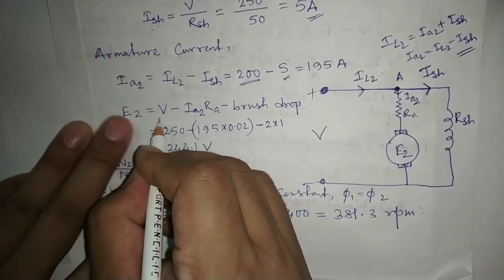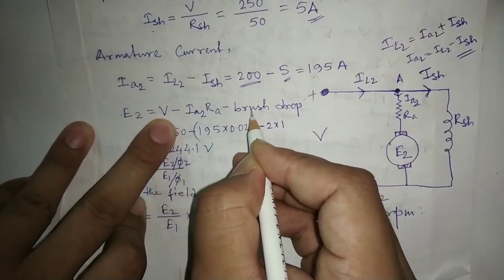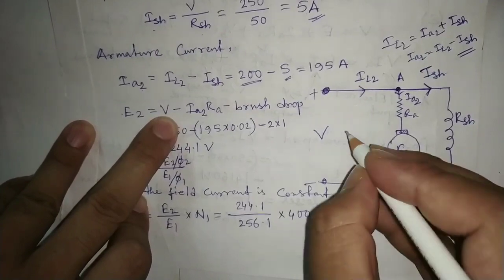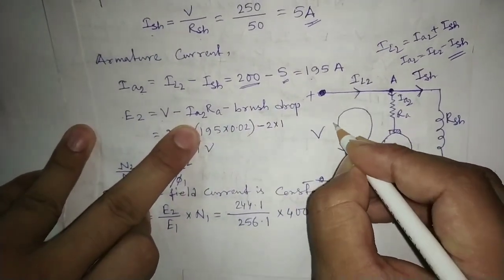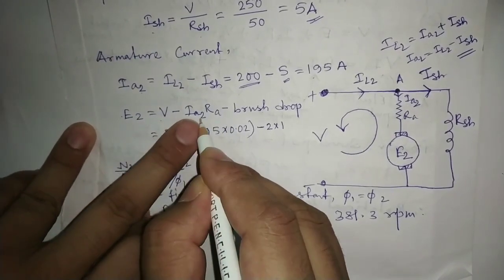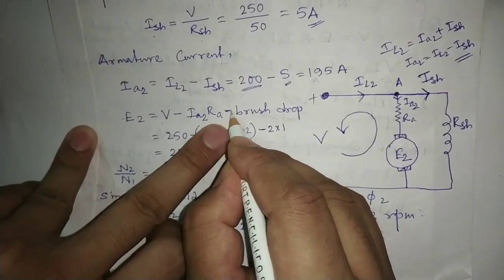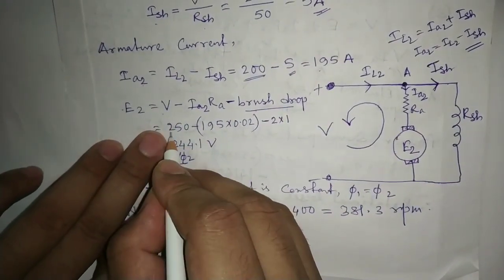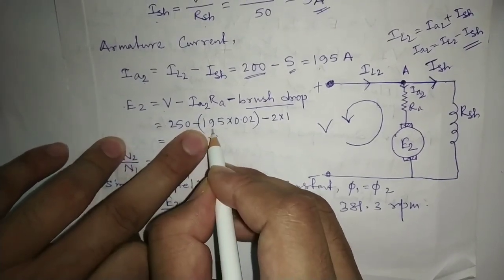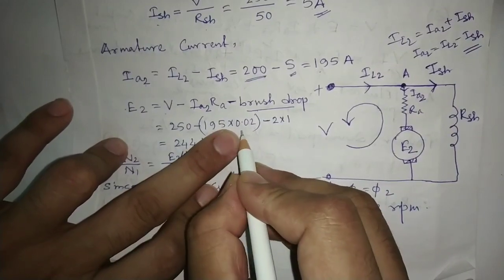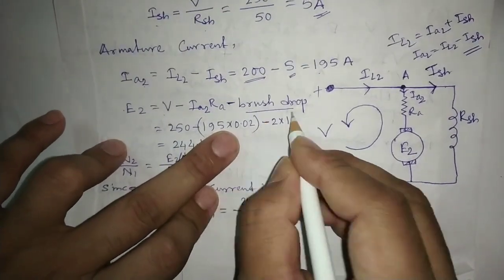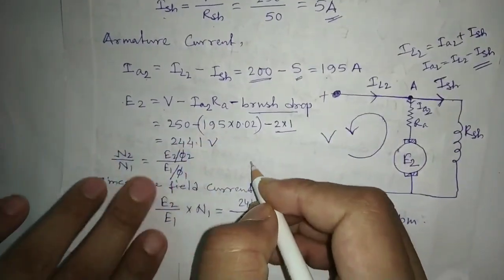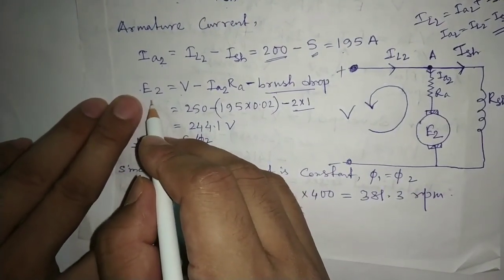The back EMF E2 for the motor is calculated by applying KVL: E2 equals V minus IA2 into Ra minus brush drop. Substituting: 250 minus 195 into 0.02 minus 2 into 1 (brush drop is 1 volt per brush, 2 brushes giving 2 volt total). So E2 equals 244.1 volt.